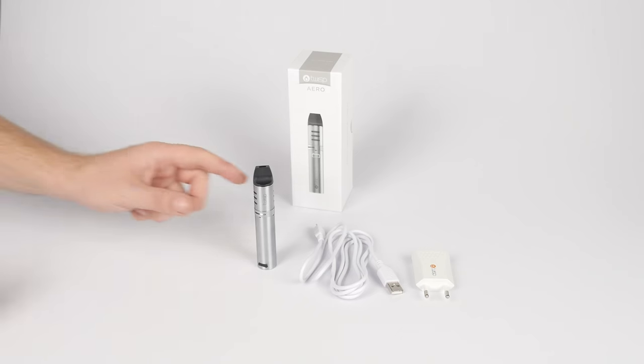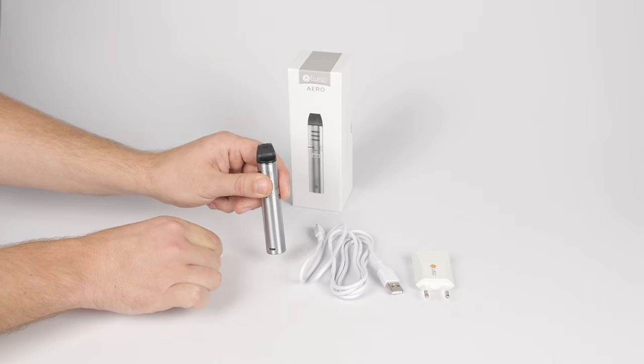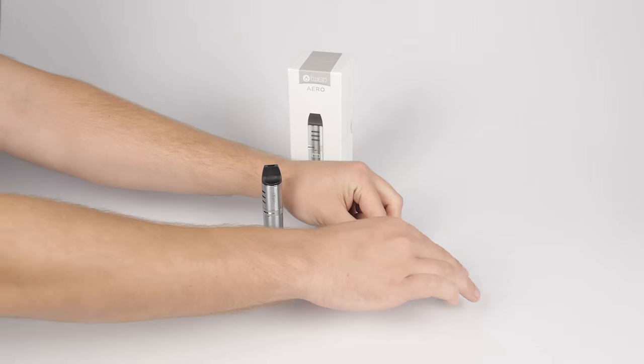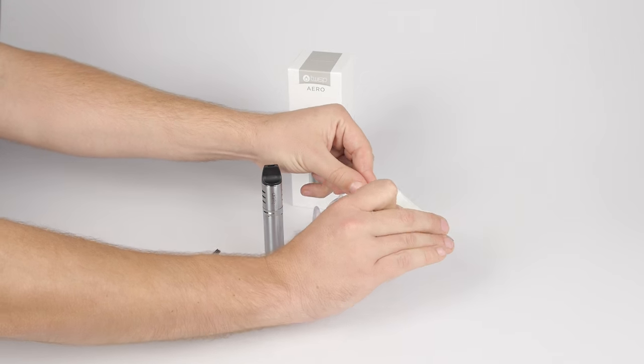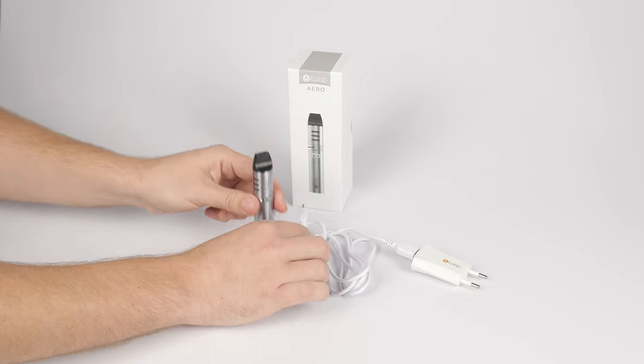To charge your TWISP AERO, carefully remove the black rubber plug from the mini USB port. Plug the USB charger into a wall socket or a powered USB port not exceeding 5 volts. Then plug the charger into the port on the device.